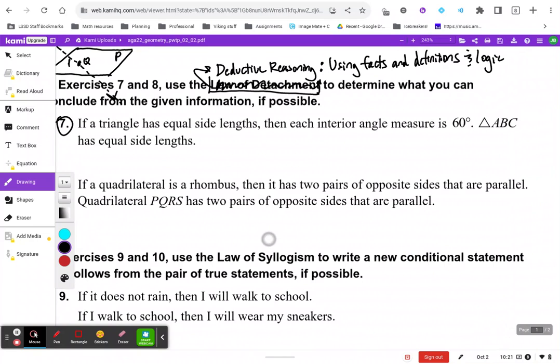If a triangle has equal side lengths, then each interior angle measure is 60 degrees. This is something that is true. This is a fact that we know to be true already. And then we have the statement triangle ABC has equal side lengths.